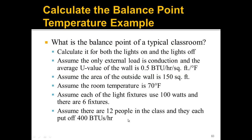Let's look at a typical classroom example. We're going to calculate the balance point for both lights on and lights off. Assume the only external load is conduction, the average U-value of the wall is 0.5 BTU per hour per square foot per degree Fahrenheit, and the outside wall area is 150 square feet. Assume room temperature is 70°F, each of 6 light fixtures uses 100 watts, and there are 12 people each putting off 400 BTU per hour.